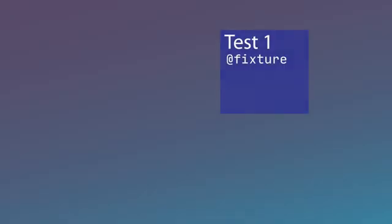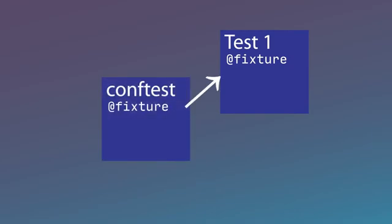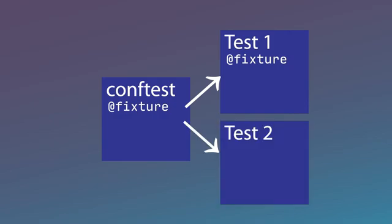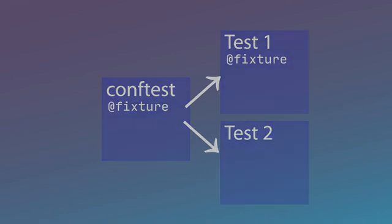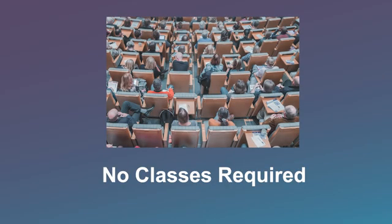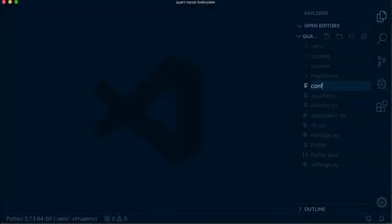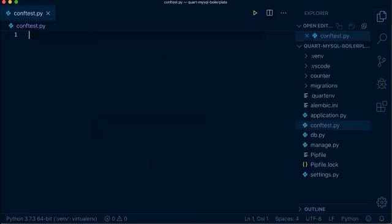These fixtures can live in the same test files that use them, or you can put them in a special file called conftest. Any conftest fixtures in a parent directory are available to the tests in the child directories. You'll get the hang of it as you start building your tests. Since PyTest doesn't require classes — although they can still be used — let's create our first conftest file on the root application folder.